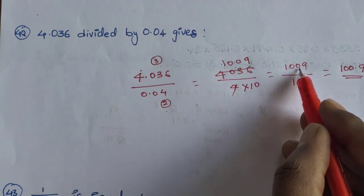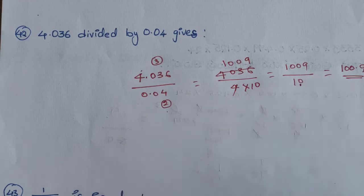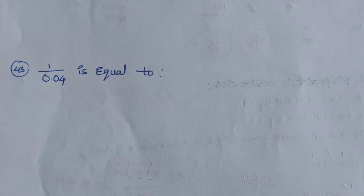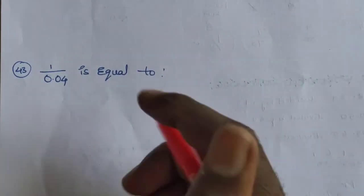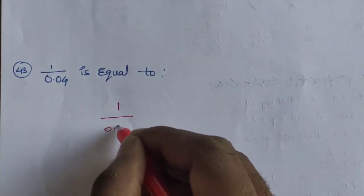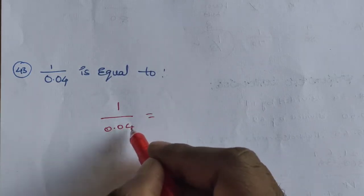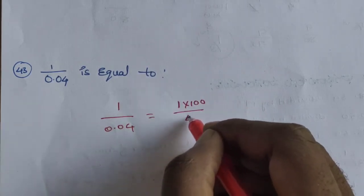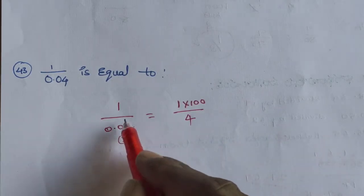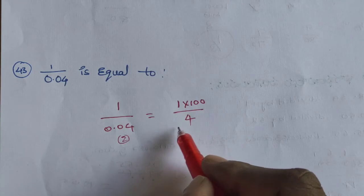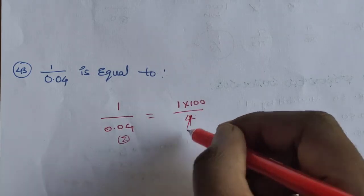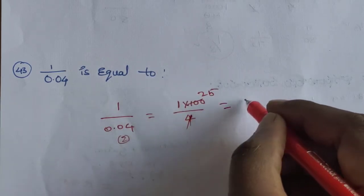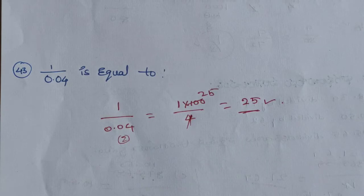100 divided by 0.04. That is equal to 1 by 0.04, which equals 1 divided by 0.04. Simplifying: 4 by 4 by 4 — 1 into 25 equals 25. Answer is 25. Next question.